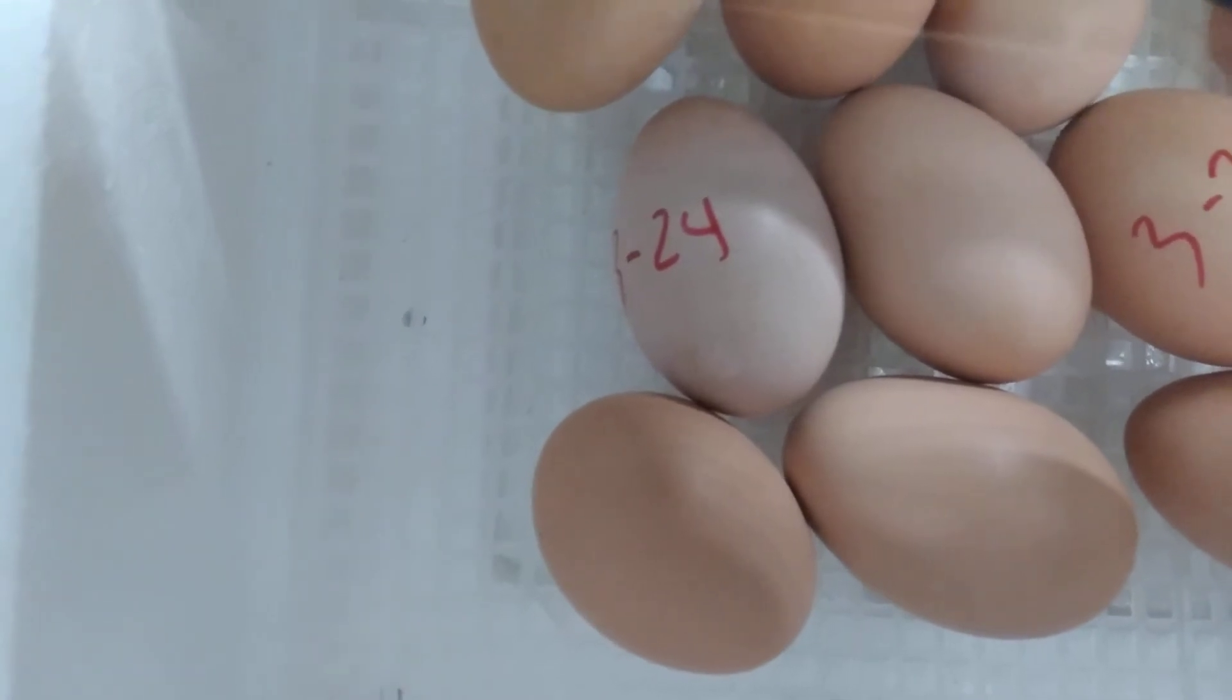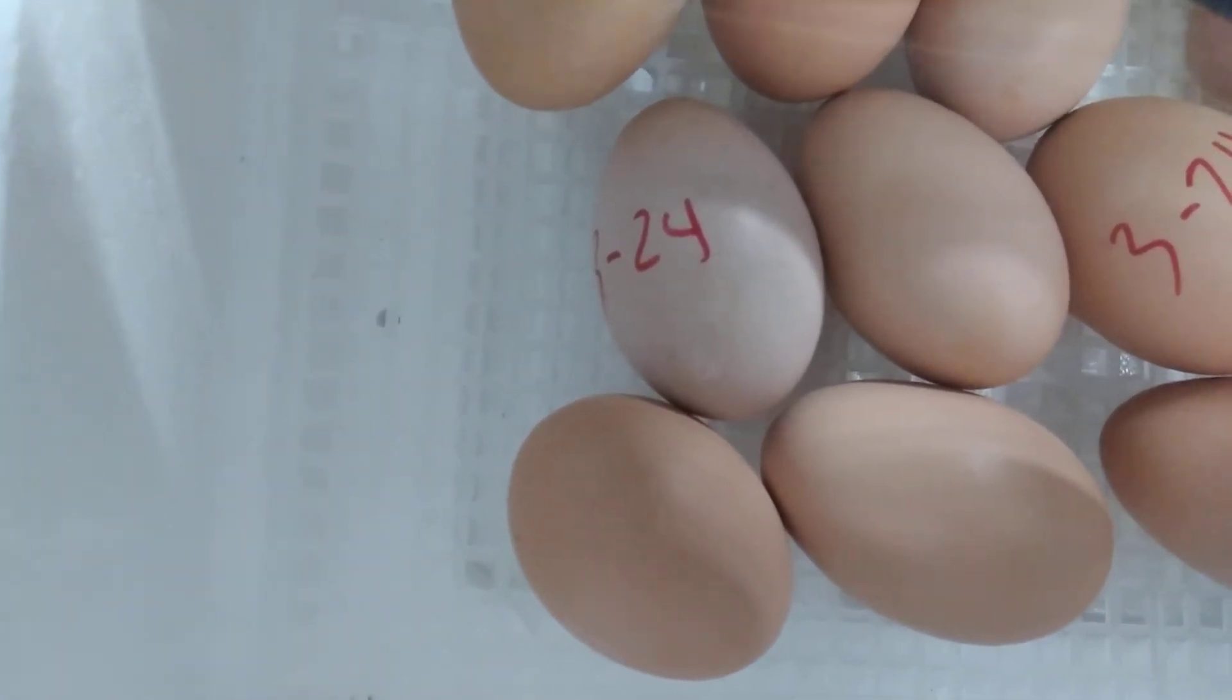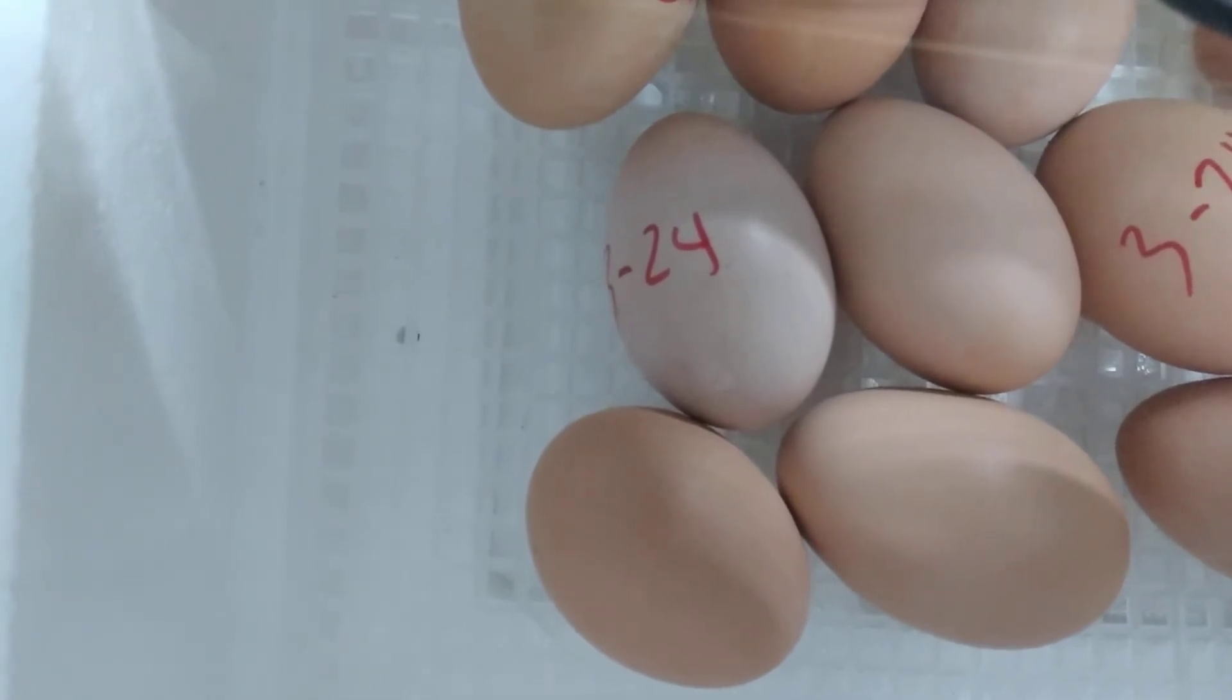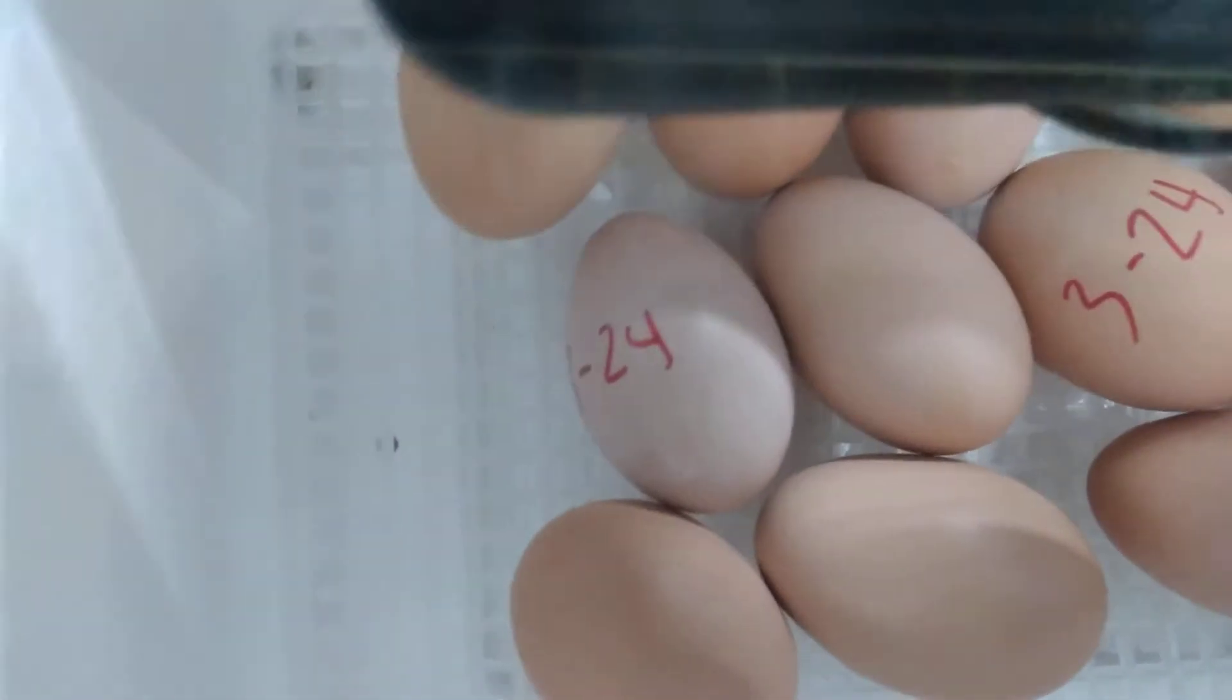But it's the one right there with the 24. Like, the one right there in the middle with the 24, you can only really see the 24, and there's a big bump. The baby chick has cracked open the egg and it is trying to come out.